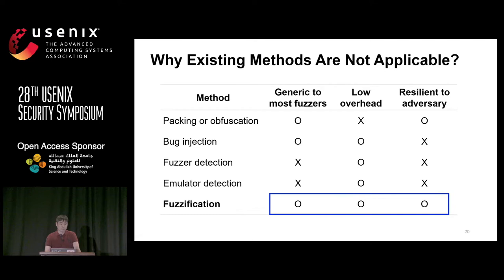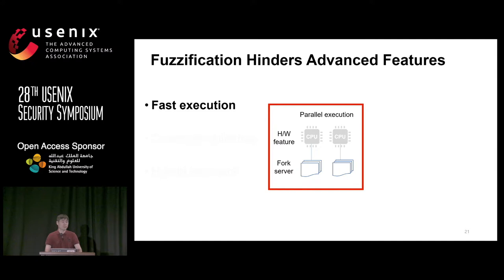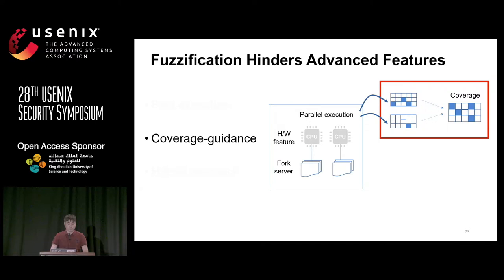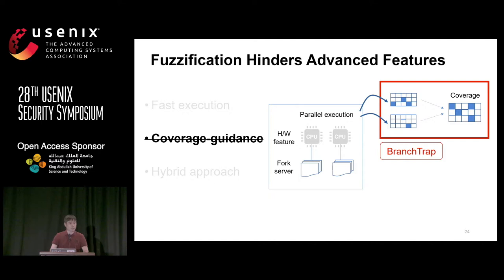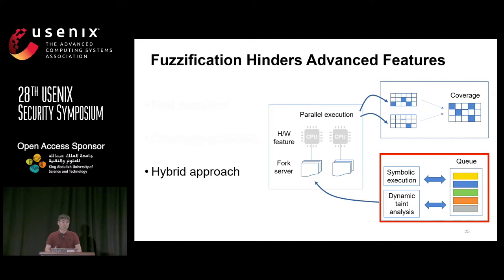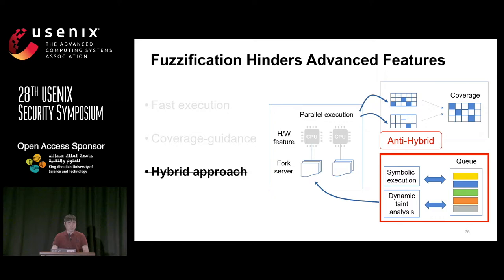So we came up with a new solution called fuzzification, which satisfies all criteria. Fuzzification hinders the advanced features of modern fuzzers. First, modern fuzzers are very fast, utilizing parallel execution, hardware features, or fork servers — so to slow them down, we propose the first component called speed bump. Fuzzers also check execution coverage, so to make coverage management useless, we propose the second component called branch trap. Finally, modern fuzzers work with symbolic execution or dynamic data analysis, so for hybrid fuzzers we prepared the third component called anti-hybrid.